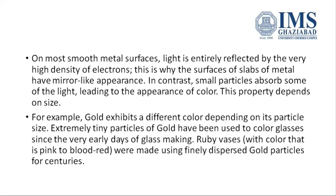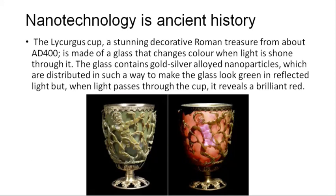Extremely tiny particles have been used to color glass since the very early days of glassmaking, and vessels with color ranging from pink to blood red were made using finely dispersed gold particles for centuries. Coming to the history of nanotechnology, these Roman cups are stunning decorative pieces — they change color because they had a coating of gold and silver. The artisans might not have known it, but they were unknowingly using nanoparticles. As you can see, the glass looks green when it reflects light, but when light is passed from behind, it gives a brilliant red color.